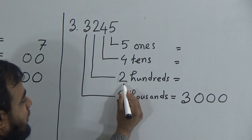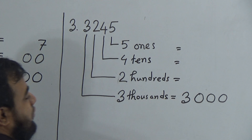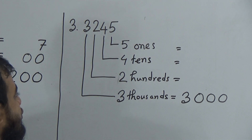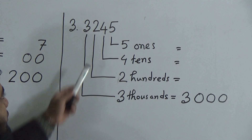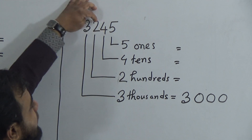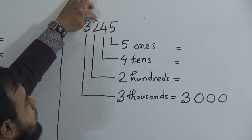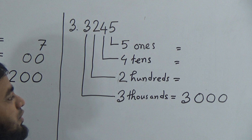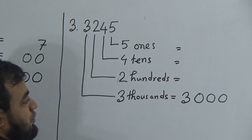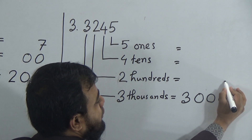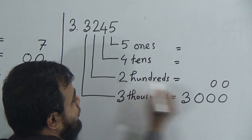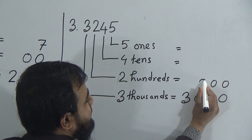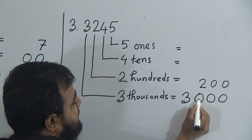Then we write 2 hundreds on top of that 3000. To write 200, after 2 we have 2 digits, so we use 2 zeros after 2. We write 2 zeros from the right side on top of 3000, then write down the number 2 to the left of those zeros.